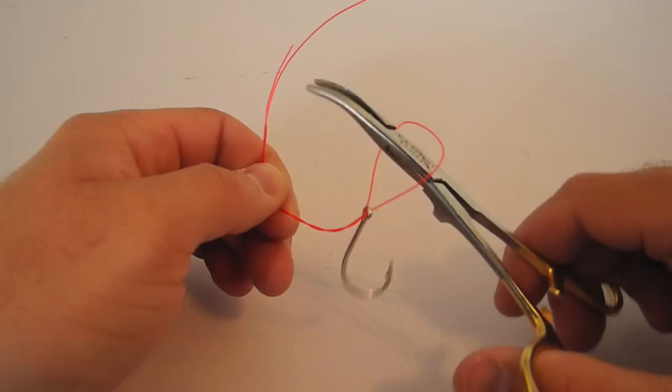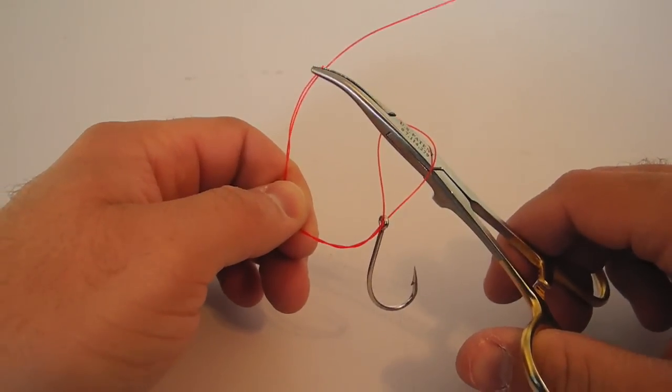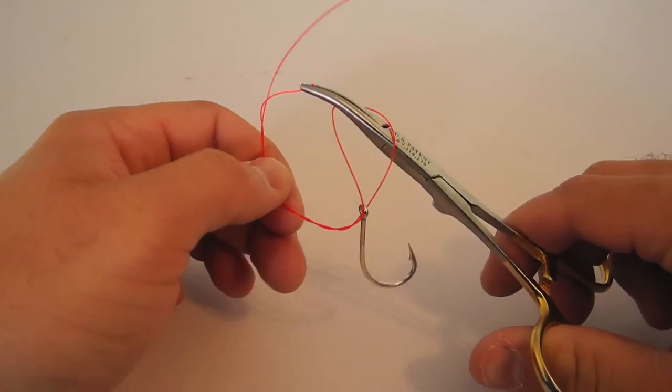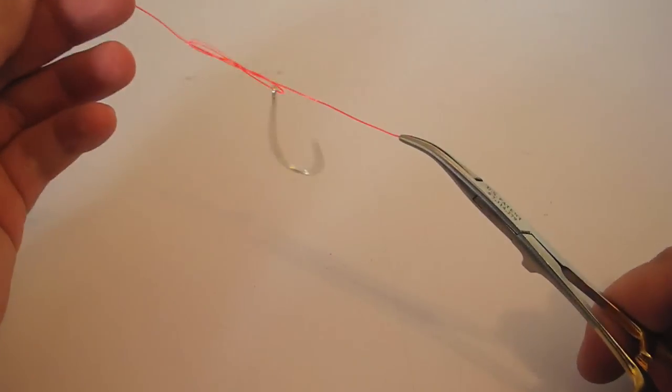Next, I'm going to open up the jaws of my hemostats, grab the tag end of that piece of tippet, and pull it through.